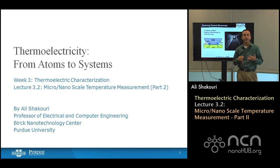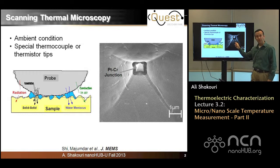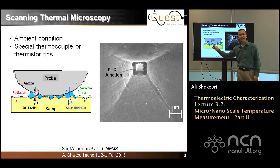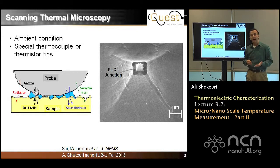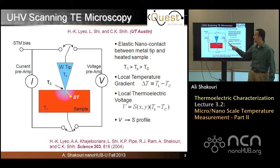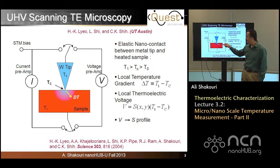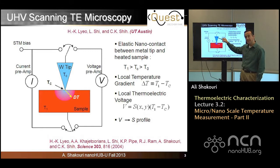Last time we finished by discussing how scanning thermomicroscope works when you put an atomic thermocouple at the tip of an atomic force microscope, and some of the issues that reduce the resolution limits. Here we want to show that this is not an inherent problem. There are examples where ultra-high vacuum scanning thermoelectric microscopy has been demonstrated, where atomic scale temperature and thermoelectric measurements have been shown. In this case the tip is simple, so you can make it extremely sharp, but the tip is at room temperature and you have a heated sample.